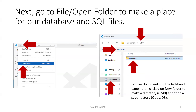I go to the menu, then File, then Open Folder, and the Open Folder dialog comes up. I'm going to choose Documents — sort of midway down on the left. Across the top toward the left, there is a New Folder icon. When I click on that, I can make a new folder. I'm making a subfolder of Documents called C240 — that's the class I'm teaching.